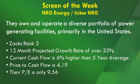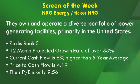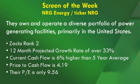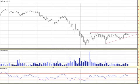One stock that came through the screen — among plenty — is NRG Energy, ticker NRG. They own and operate a diverse portfolio of power-generating facilities primarily in the United States. They have a Zacks Rank of 2, an estimated EPS growth rate for the next 12 months of over 33%, and they've increased their cash flow by over 6% over their five-year average. Their price to cash flow is only 4.19, and their P/E ratio is also quite low at 9.56. Looking at the chart, they're trading in the upper part of their recent range, and a breakout through the 25-ish area should see the stock go nicely higher.